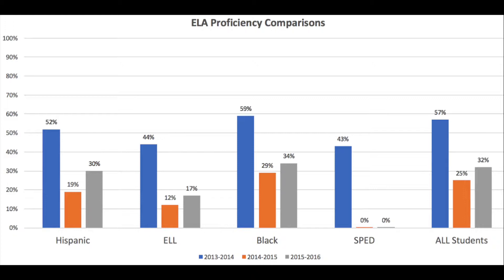The ELA proficiency comparisons illustrate a discrepancy of growth among subgroups. Most significantly, students with disabilities showed zero growth between 2014-15 and 2015-16, which needs to be more closely examined. Every other subgroup showed overall growth. Additionally, ELL students are still performing significantly lower than Black and Hispanic students — ELL proficiency levels are 13% lower than Hispanic students and 17% lower than Black students.